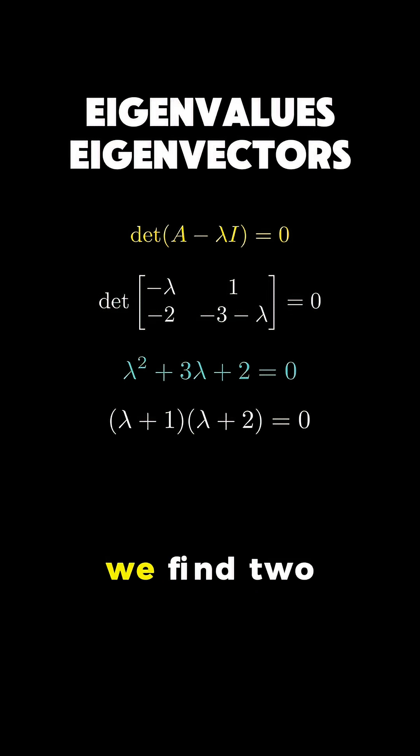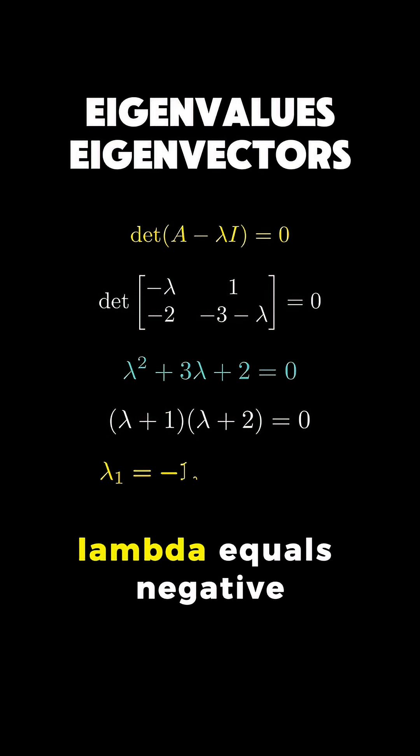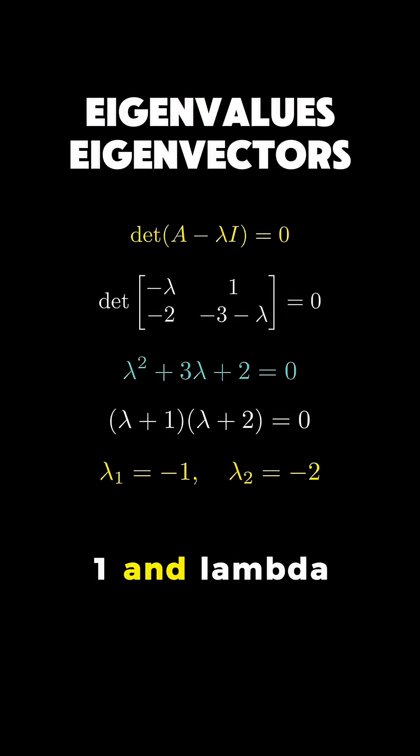Factoring the quadratic, we find two roots: lambda equals negative 1 and lambda equals negative 2. These are our eigenvalues.